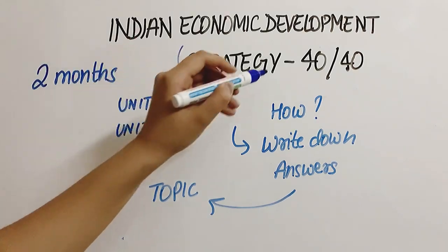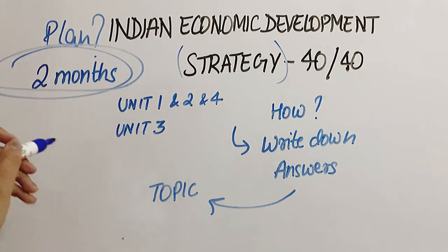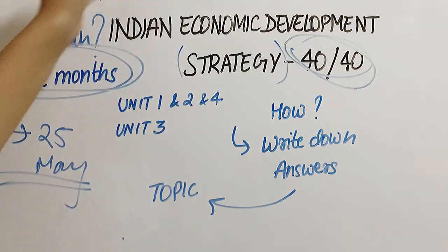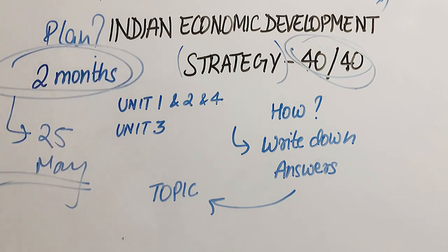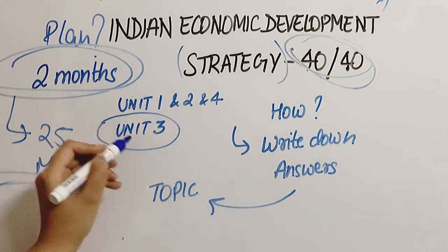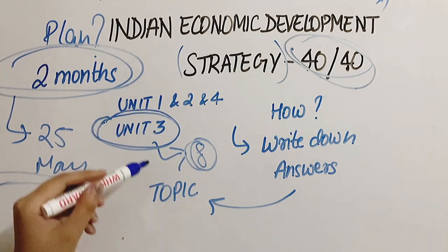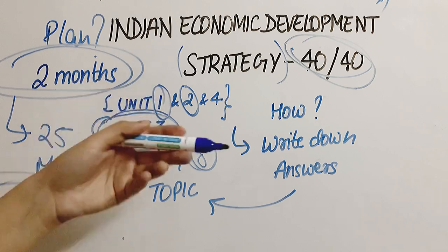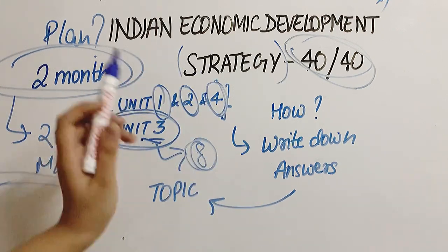Now coming on to the strategy and study plan for the next two months — our Economics exam is on 25th May. For strategy to score 40 out of 40 in Indian Economic Development: Unit 3 has 7 to 8 chapters, so spend the whole of March completing Unit 3 thoroughly. Units 1, 2 and 4 are not that heavy — Unit 2 has just liberalization and globalization, Unit 1 has two things, and Unit 4 has just the neighbors topic. So do all of Unit 3 in March.